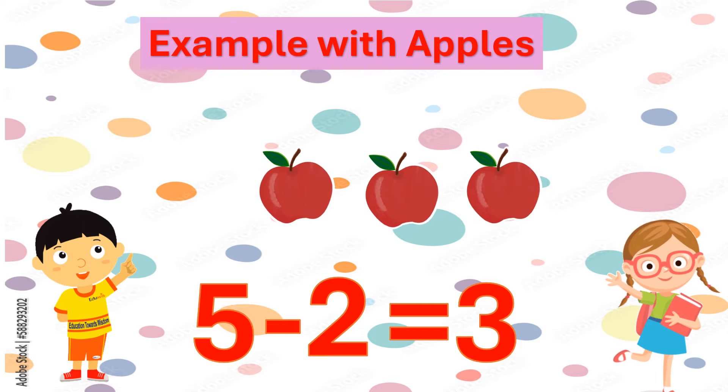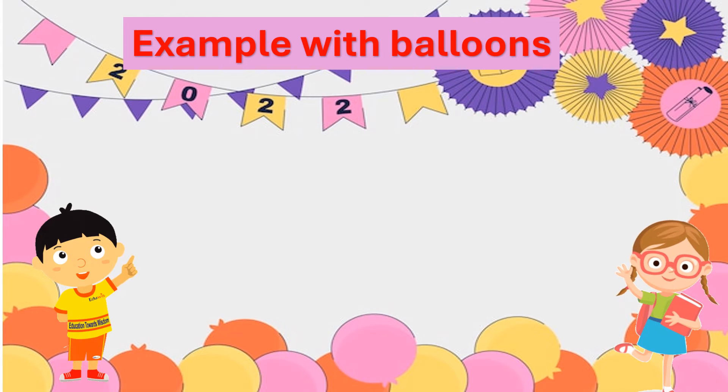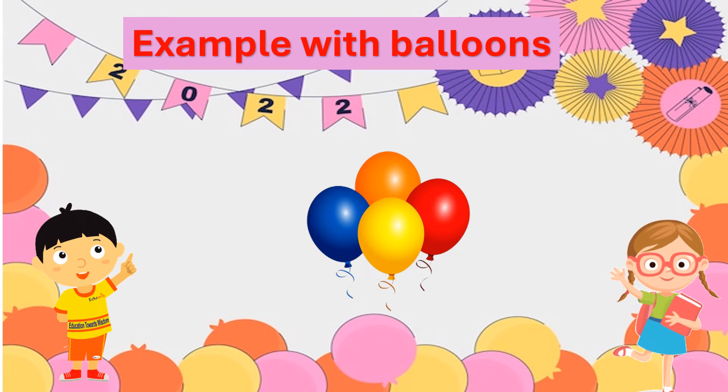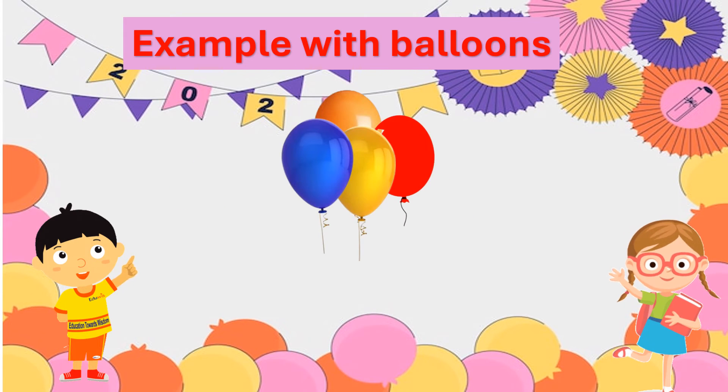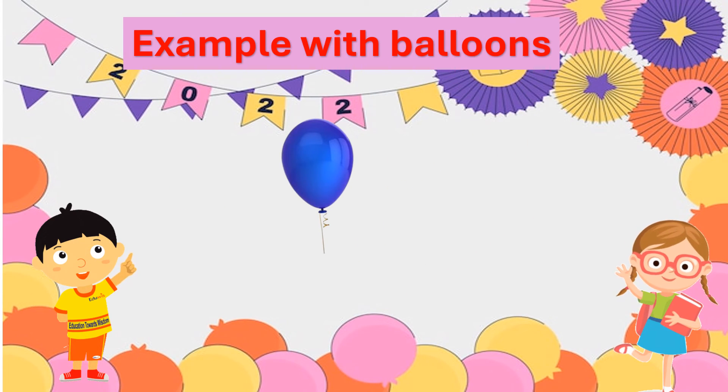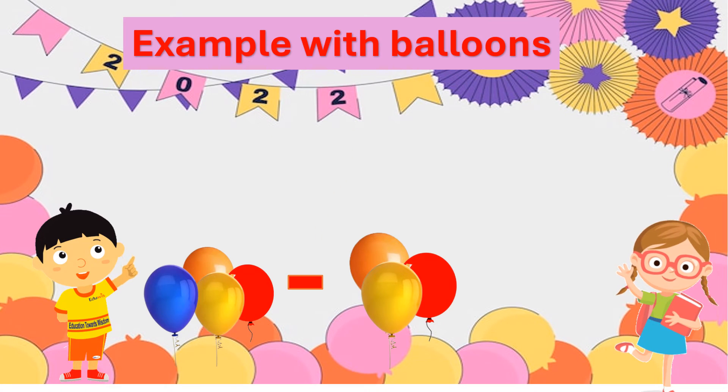Let's try another one. We have four balloons here. If we take away three balloons, how many do we have left? One. We have one balloon left. So four minus three equals one.